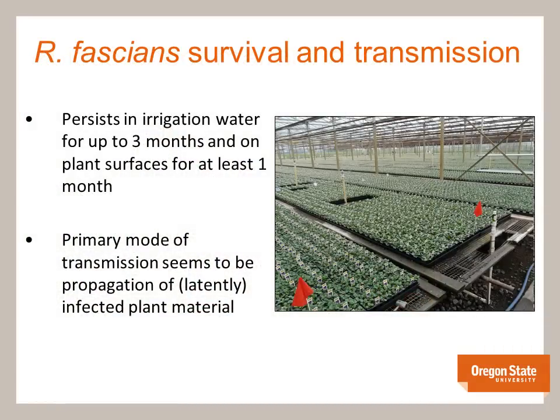Rhodococcus fascians is a persistent organism which can remain viable in irrigation water for up to three months and on plant surfaces for at least a month. This pathogen can also survive several months on plants without showing any symptoms. As a result, growers might unknowingly propagate infected plants, leading to large economic losses. The primary mode of transmission seems to be propagation of latently infected plant material, although infection can also take place via irrigation water movement through potting soil.